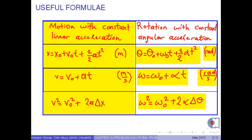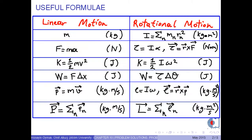Let's have a look at the last analogy. Corresponding to mass in linear motion, we have moment of inertia I in angular motion. Newton's second law in linear motion has this form in angular motion, where tau is torque, I is the moment of inertia, and alpha is the angular acceleration. Torque tau is a vector calculated by the formula R cross F.